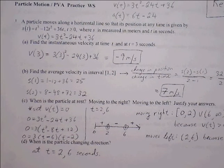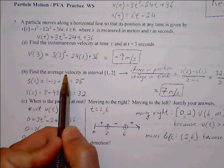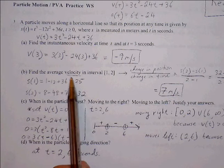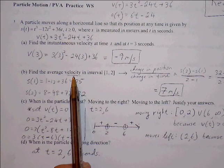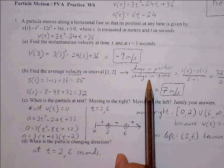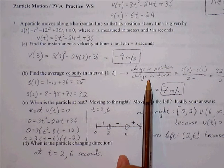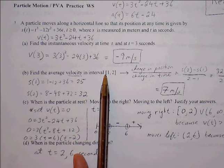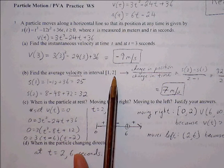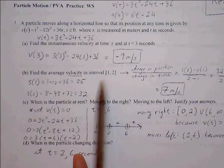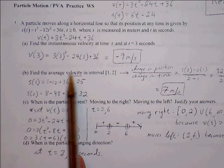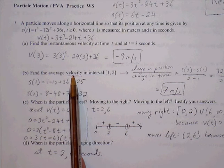Find the average velocity on the interval. We have to be careful here. We see the word velocity, but average velocity — the definition for average velocity is the change in position over change in time. Students sometimes want to find velocity at 1 second and at 2 seconds and average those, but that's not how we do it. If it says average velocity, we use change in position over change in time.